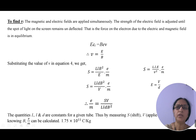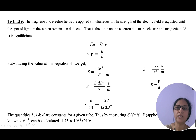At equilibrium: eE = evB, so the charges cancel, giving v = E/B, where E is the strength of the electric field and B is the strength of the magnetic field. Substituting this value of v into the shift expression from equation 4, we get v² = E²/B², so B² moves to the numerator. One E cancels, leaving: S = (capital L · small l · B²) / (capital E) · (e/m). Replacing E with V/D, since the electric field between the plates equals the applied potential divided by the plate separation.